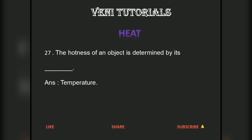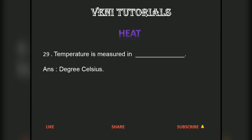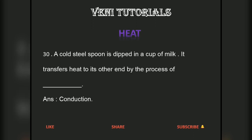The hotness of an object is determined by its temperature. The temperature of boiling water cannot be measured by a clinical thermometer. Temperature is measured in degrees Celsius. A cold steel spoon dipped in a cup of milk transfers heat to its other end by the process of conduction.